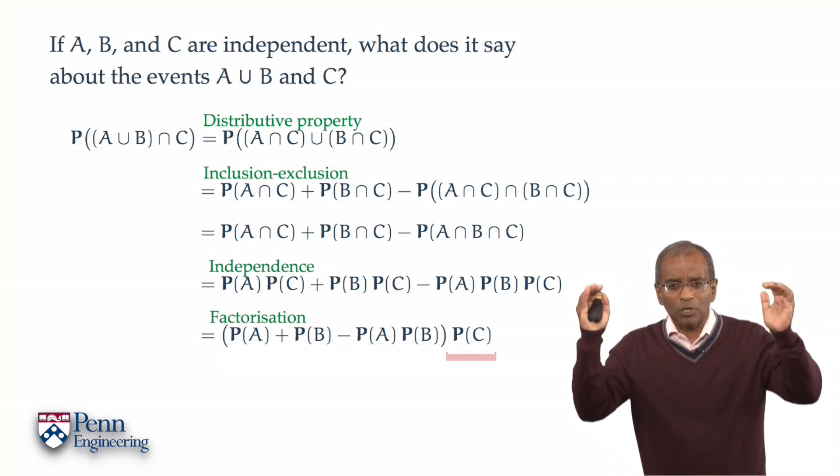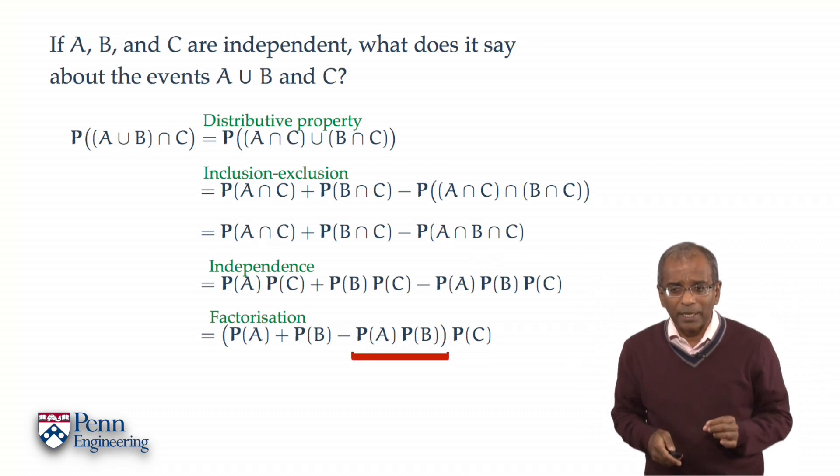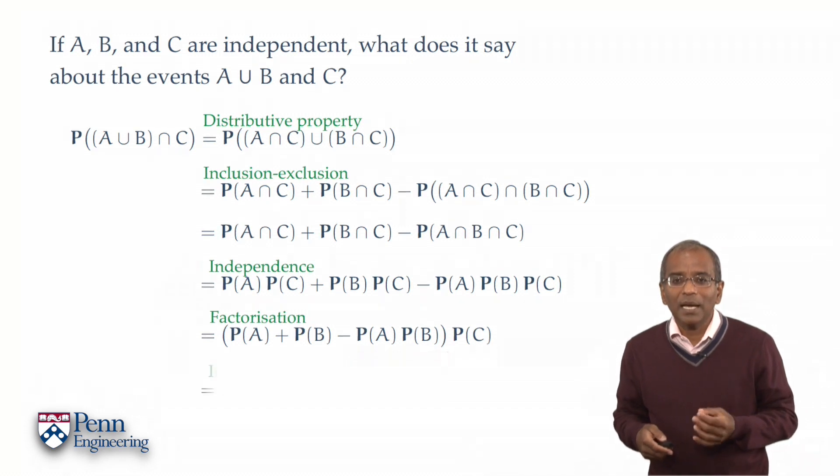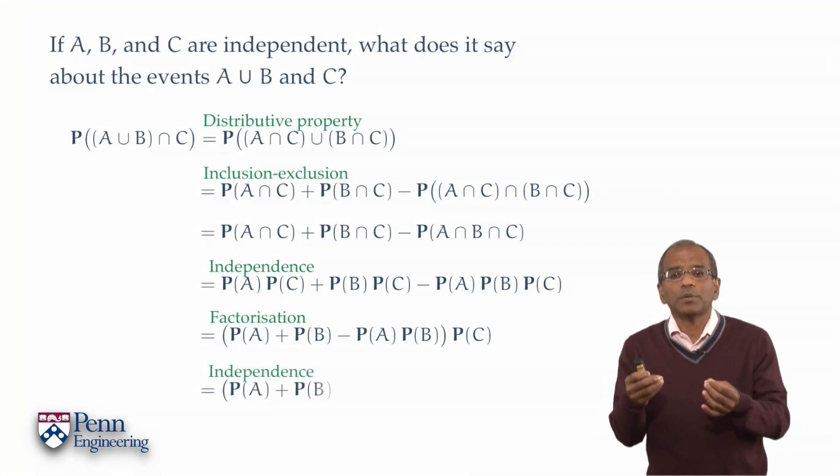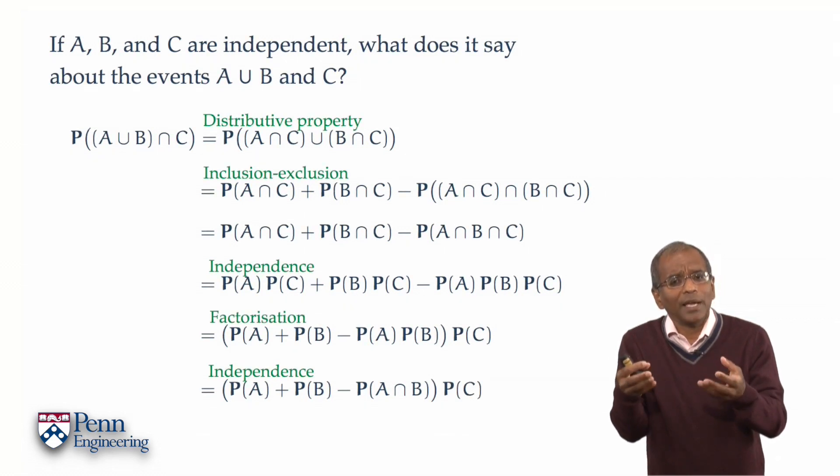Now let's take a look at the term in round brackets. The third expression there is the probability of A times the probability of B. But if A, B, and C are independent, then surely A and B are independent, and this is, in fact, the first relation that must be satisfied. The probability of A times the probability of B is exactly identified with the probability of A intersection B. This is what independence gives us for the pair A and B.